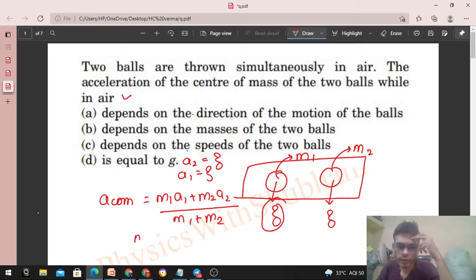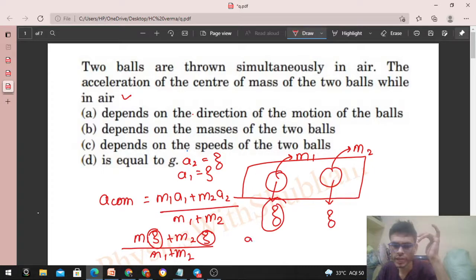So a1 will be g and a2 will also be equal to g. So m1·g plus m2·g divided by m1 plus m2. You see, g common a jayega and m1 plus m2 cancel ho jayega, so that is g, right? Acceleration of center of mass will be g.